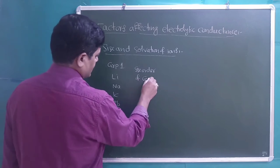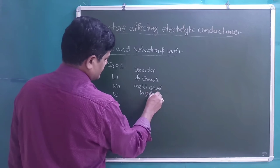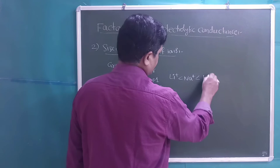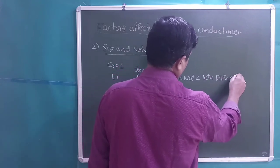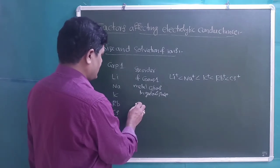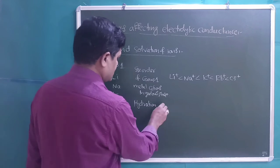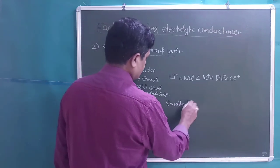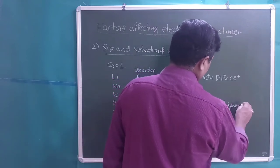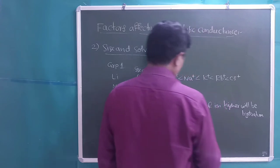But when we take these same ions in water, the general principle for hydration is: smaller the size of the ion, higher will be the hydration. Being very small in size, lithium has more hydration. Due to this hydration effect, the size order of these metal cations is reversed in aqueous solution.